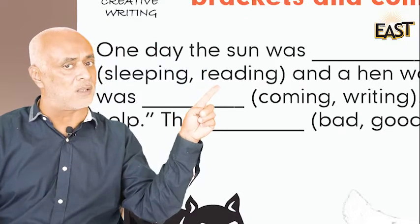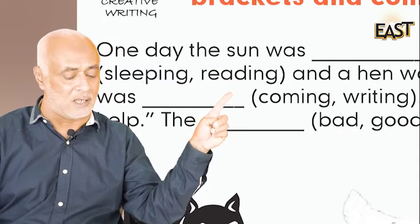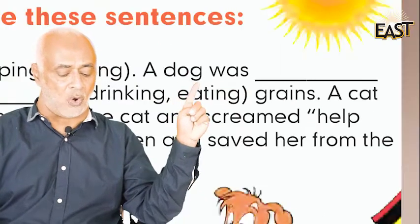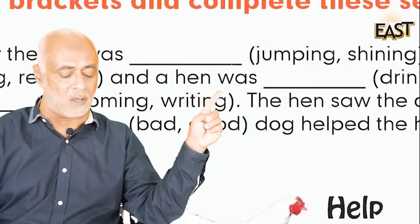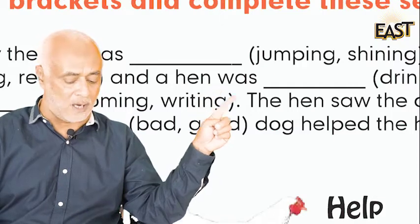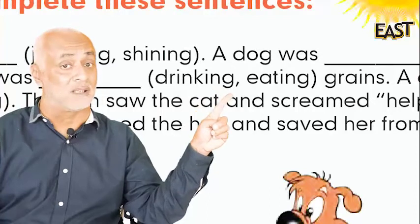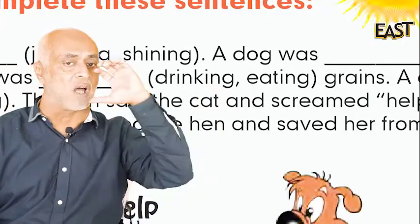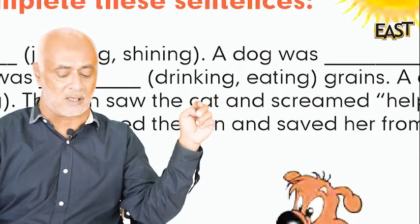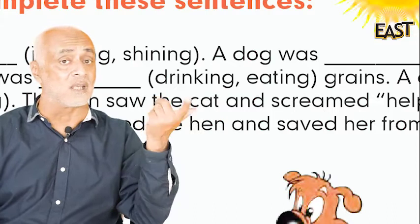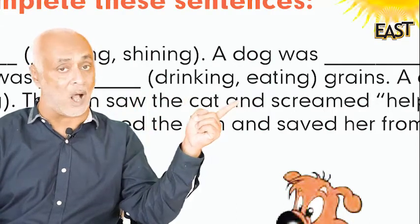Next: 'A dog was ___.' A dog was sleeping — so raha tha ya reading ker raha tha? Reading kya ker raha tha? A dog was sleeping. And 'a hen was ___.' A hen was drinking or eating? Ek murghi jo thi woh drink kar rahi thi ya eating kar rahi thi? Grains — dane kya karte hain? Peete hain ya khate hain? You tell us.